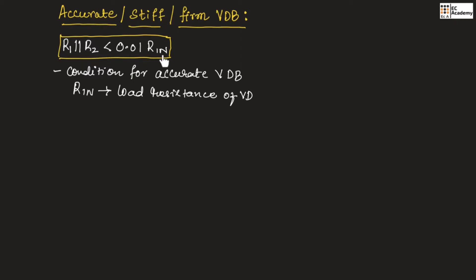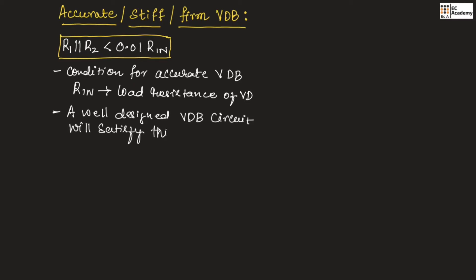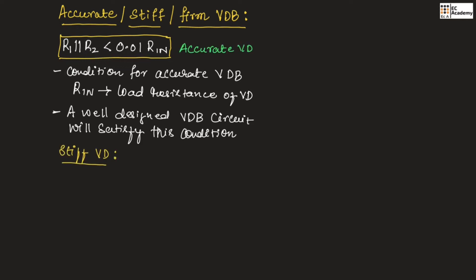A well-designed voltage divider bias circuit will satisfy this condition, so that we can get the accurate value. Hence it is known as accurate voltage divider biasing. Now let us understand stiff voltage divider.